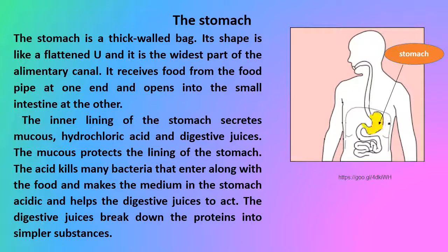The stomach is a thick-walled bag. Its shape is like a flattened U and it is the widest part of the alimentary canal. It receives food from the food pipe at one end and opens into the small intestine at the other. The inner lining of the stomach secretes mucus, hydrochloric acid, and digestive juices. The mucus protects the lining of the stomach. The acid kills many bacteria that enter with the food, makes the medium in the stomach acidic, and helps the digestive juices to act. The digestive juices break down proteins into simpler substances.